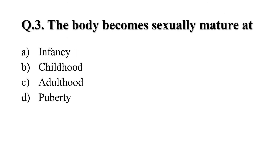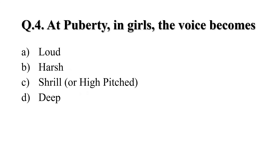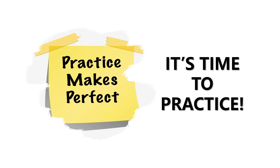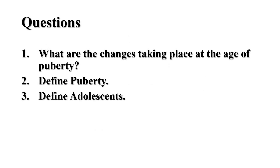Question 3: The body becomes sexually mature at — A) infancy, B) childhood, C) adulthood, D) puberty. The correct answer is D, puberty. Question 4: At puberty, in girls, the voice becomes — A) loud, B) harsh, C) shrill or high-pitched, D) deep. The correct answer is C, shrill or high-pitched. Practice makes perfect — students, it's time to practice. Your practice homework is on your screen. See you soon in the next video of this chapter. Till then, take care and thank you for watching.